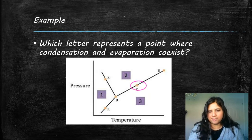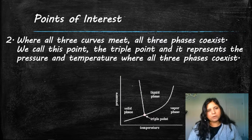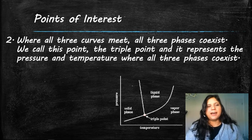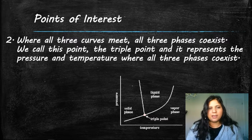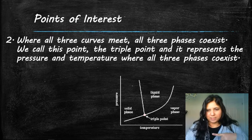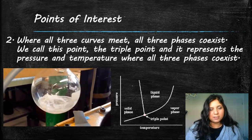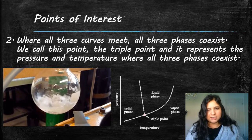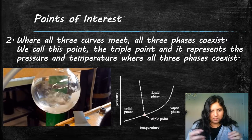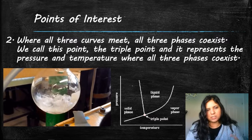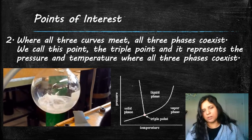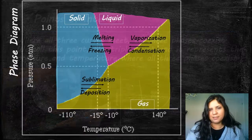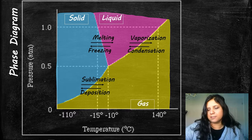Another example: which letter represents a point where condensation and evaporation coexist? That's right there between the liquid and gas phases. There's also a special point where all three phases meet — it's called the triple point. An example is t-butyl alcohol reaching its triple point, where it's simultaneously boiling, freezing, melting, evaporating, and condensing all at once. Label that on your graph as 'triple point.'